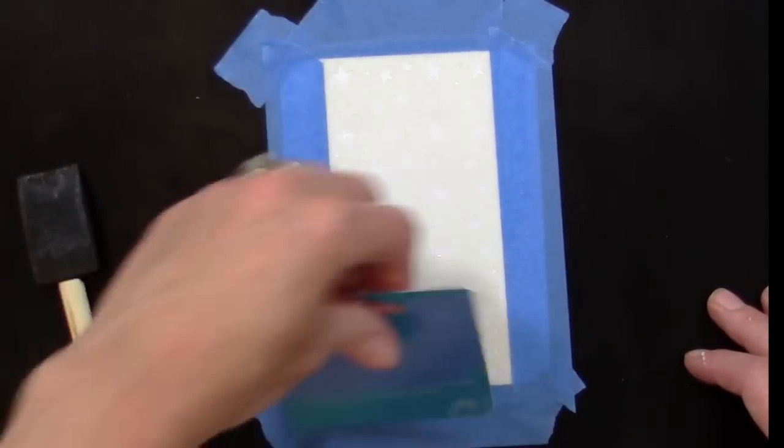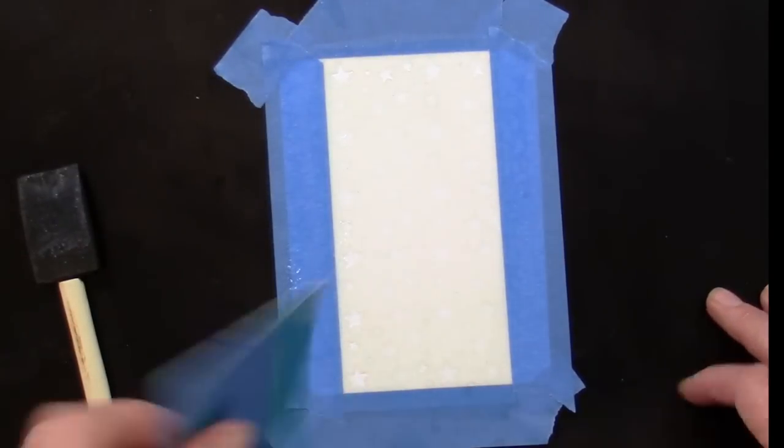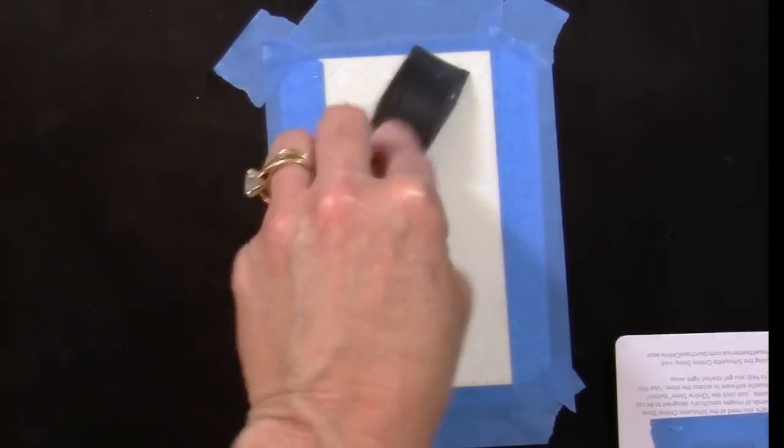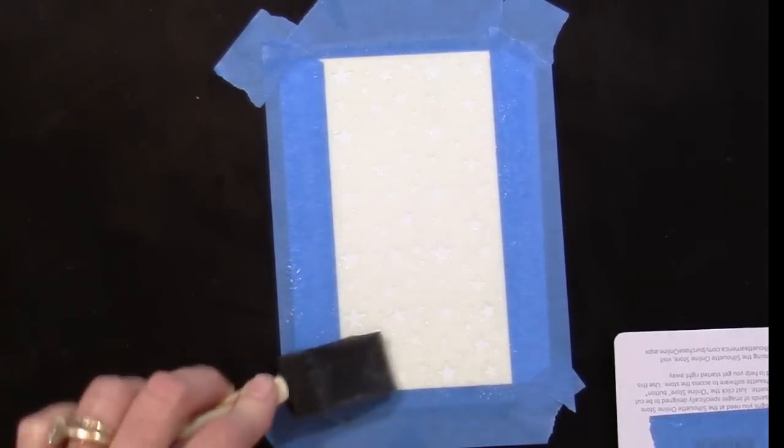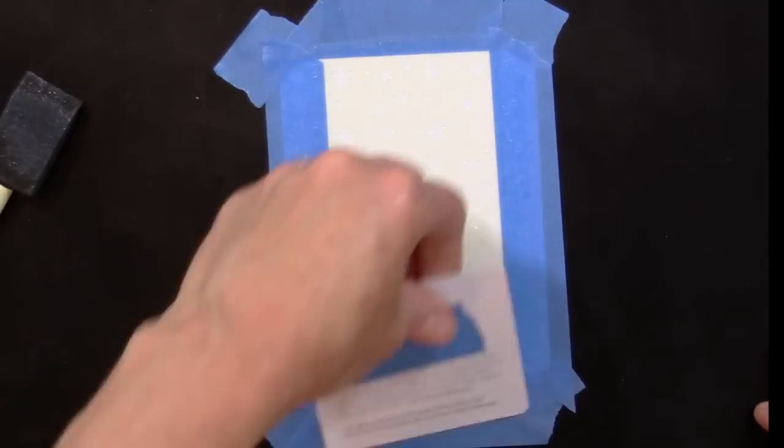You can also use a foam brush to push it down into the stencil, but it works best if you smooth it when you're finished with a credit card or a spatula.